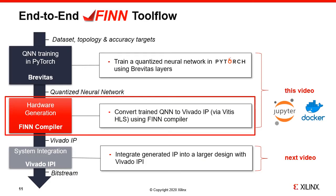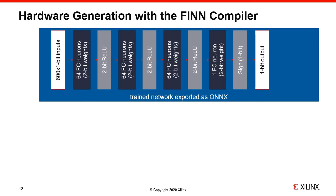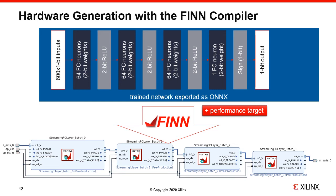Now that we have a trained quantized neural network, the next step is to use the FINN compiler to generate tailored FPGA hardware for it. The FINN compiler generates streaming dataflow hardware designs from trained QNNs tailored to the user's performance requirements. We'll supply the compiler with our trained neural network exported as ONNX and a performance target to generate custom hardware — a pipeline of streaming components where each layer is allocated its own compute and memory resources, exported as an IP design for Vivado IP integrator or as a Vitis kernel.